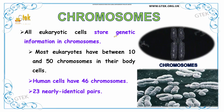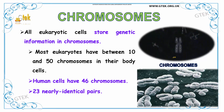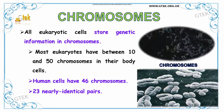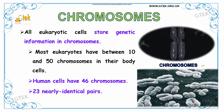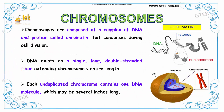Now we are going to see about chromosomes. Our eukaryotic cells store genetic information in chromosomes. Most eukaryotic cells have between 10 and 50 chromosomes in their body cells. Human cells have 46 chromosomes — nearly 23 identical pairs. You can see the chromosomes over here. The chromosomes are composed of a complex of DNA and protein called chromatin that condenses during cell division. The DNA exists as a single long double-stranded fiber extending the chromosome's entire length. Each unduplicated chromosome contains one DNA molecule, which may be several inches long.